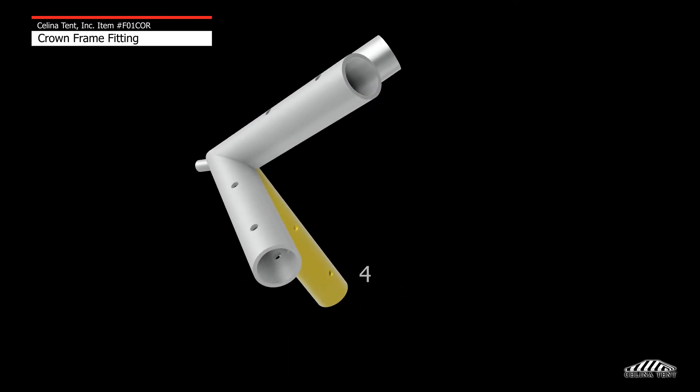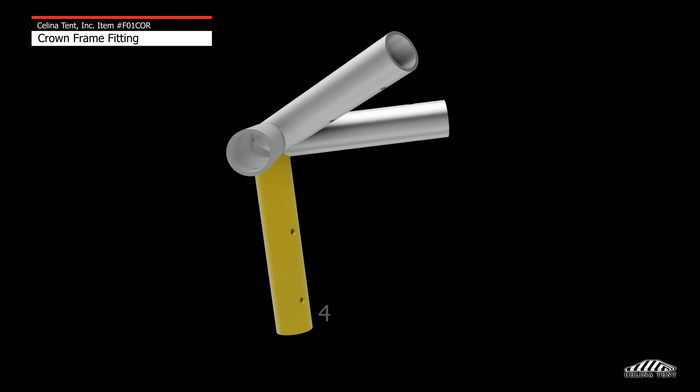The vertical protrusion four will connect to the leg and terminate at the base plate.